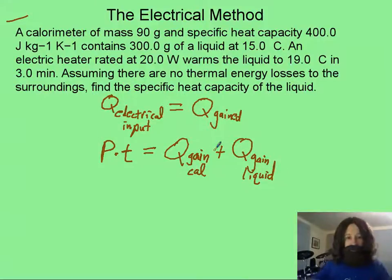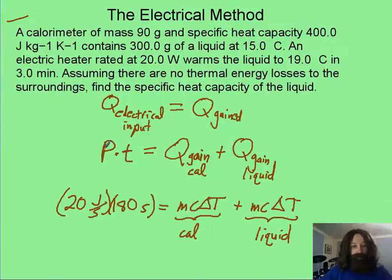Now, see if you can simplify this even more. Here, I converted my power, that was in watts, to joules per second. My time of three minutes, I want that in seconds, so that becomes 180 seconds. And then I've got my two terms. These are all different m's and different c's because this is for the calorimeter, and this is for the energy gained by the liquid.